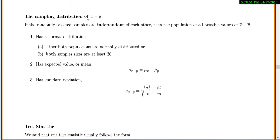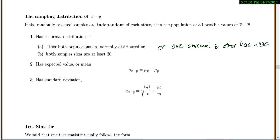The sampling distribution for the difference in sample means, if the two samples are independent, will have a normal distribution — this is the most important part. This holds if either both populations are normally distributed, or both sample sizes are at least 30, or one is normal and the other has a sample size of at least 30. The expected value equals the difference in the two population means, and the standard deviation equals the square root of each variance divided by its sample size, added together.